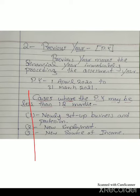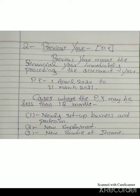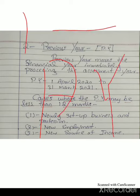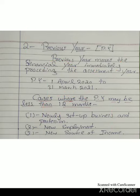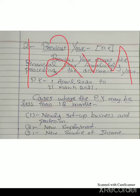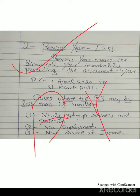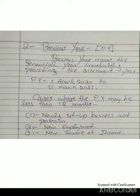The second basic term of income tax is previous year — in short, it is called PY. Previous year means the financial year immediately preceding the assessment year — the immediate last year before the assessment year. Our previous year is 1st April 2020 to 31st March 2021. The previous year is also a 12-month period. Whatever is earned in the previous year, income tax is imposed in the assessment year on the basis of that previous year income.